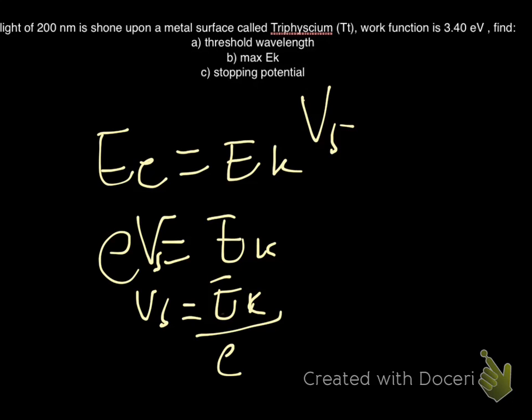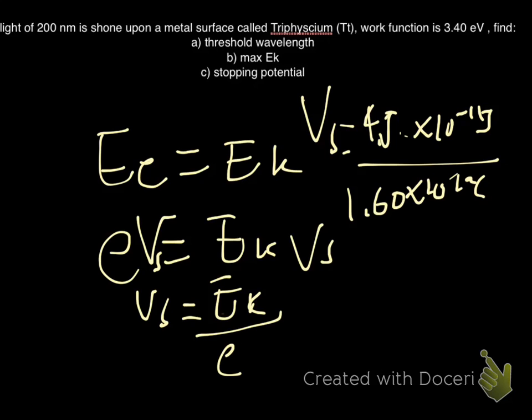Therefore, the stopping voltage is equal to 4.5 times 10 to the negative 19 joules over 1.60 times 10 to the negative 19 coulombs. Which equals to 3 sig digs of 4.95 times 10 to the 5 megavolts.